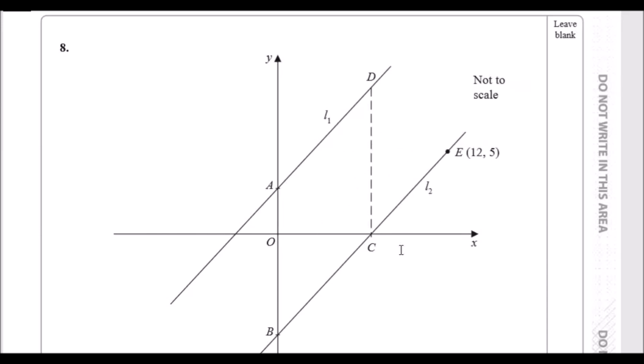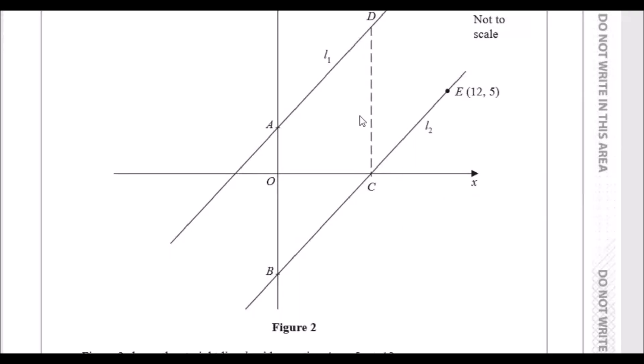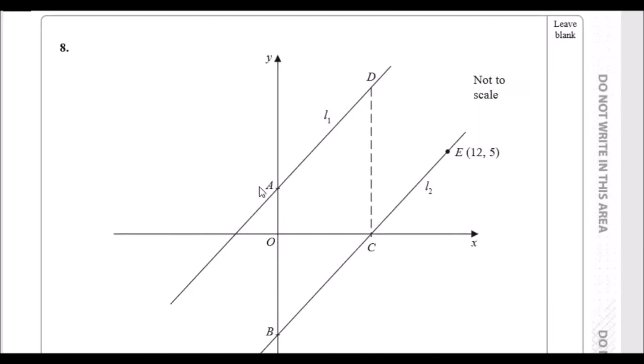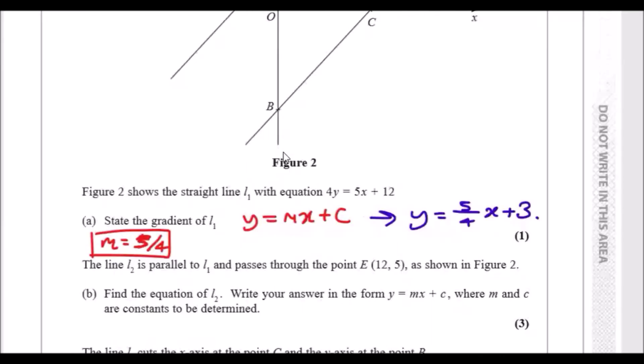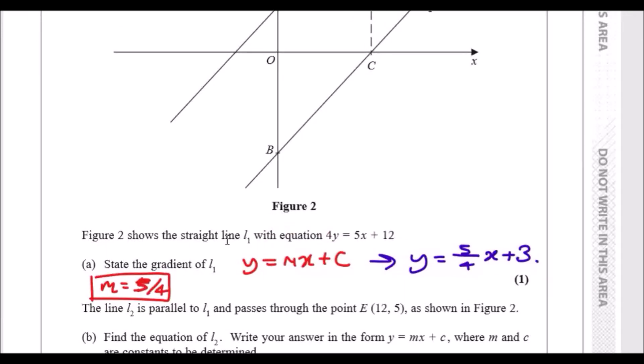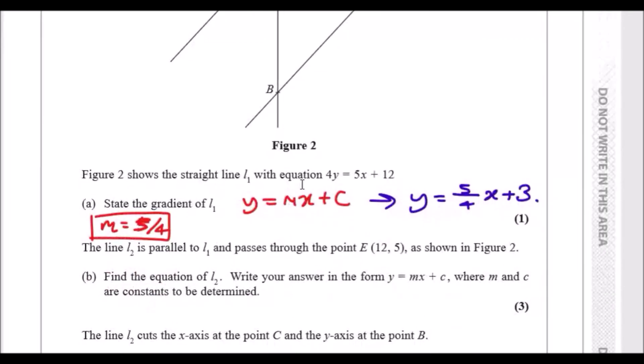When you work on equation of a line and you see these points A and B, you would automatically have them because they are known as the y-intercepts. Let's have a look at all four parts. Figure 2 shows the straight line L1 with this equation: 4y = 5x + 12. State the gradient of L1.